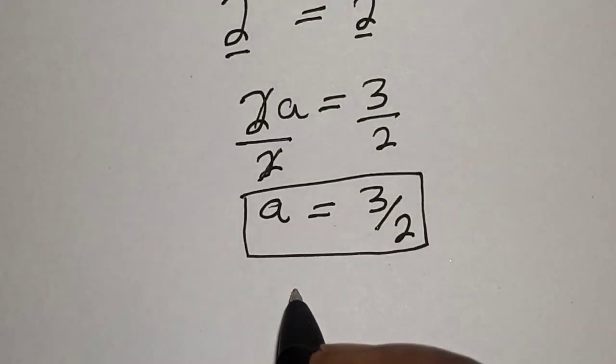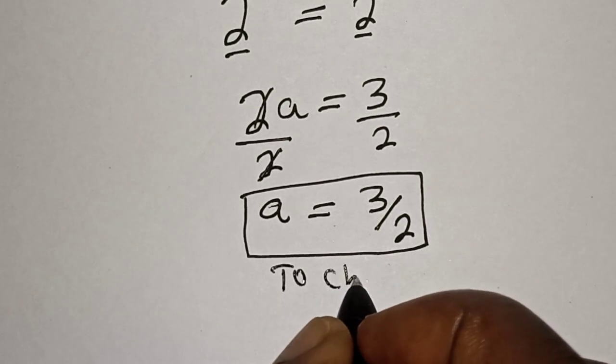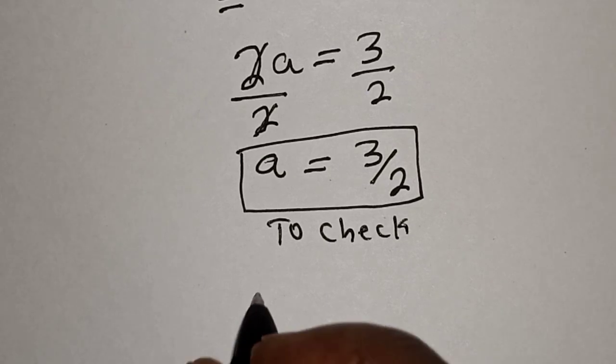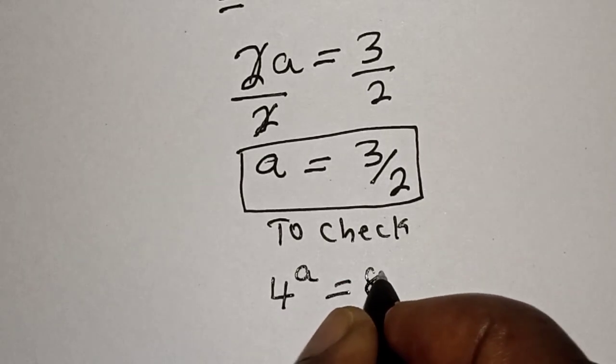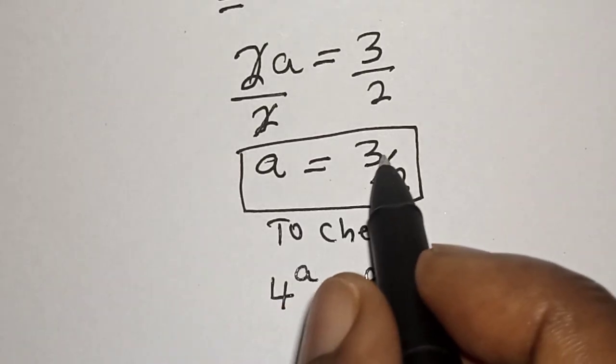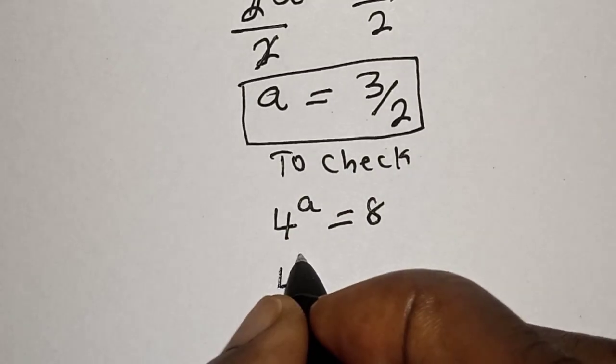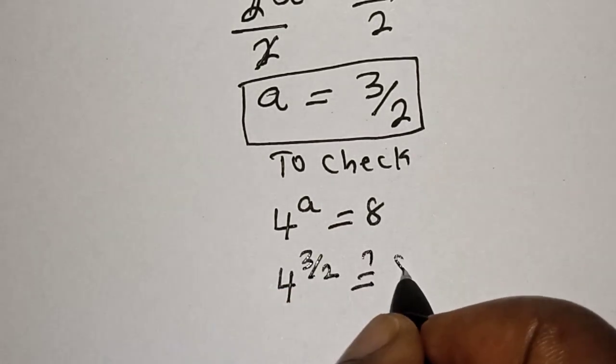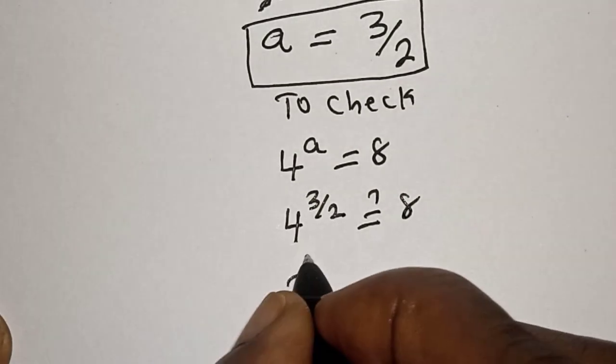We can check to confirm if our answer is right or wrong. Let's check. We have 4 to the power of a is equal to 8. Then when a is equal to 3 over 2, we have 4 to the power of 3 divided by 2 must be equal to 8. Then 4 can be written as 2 square.